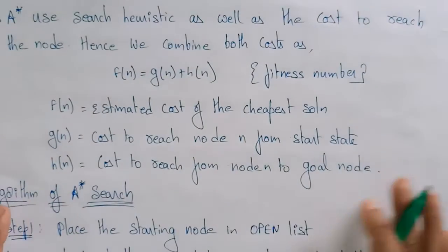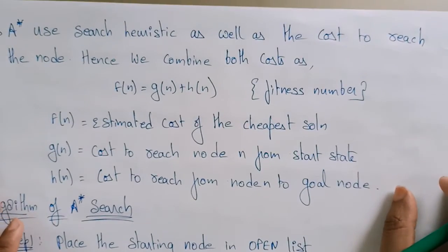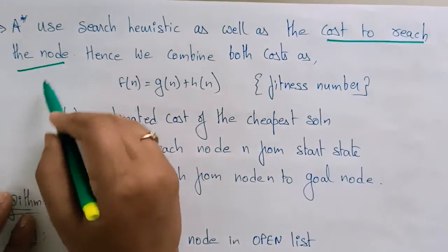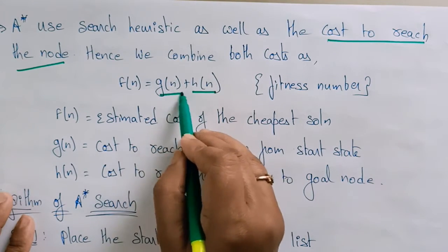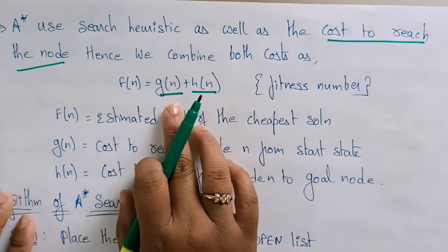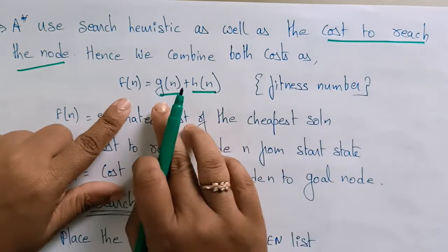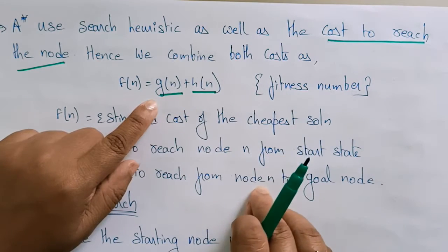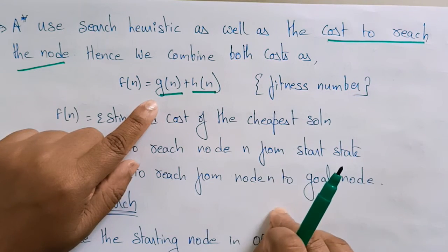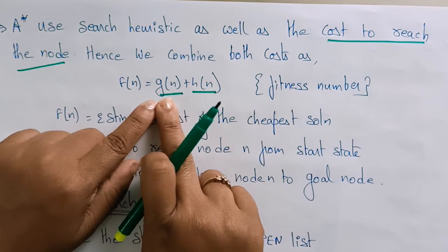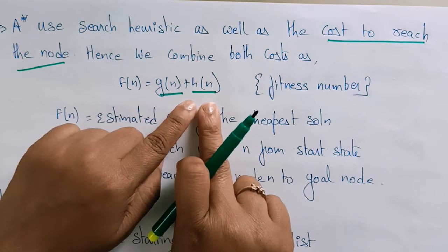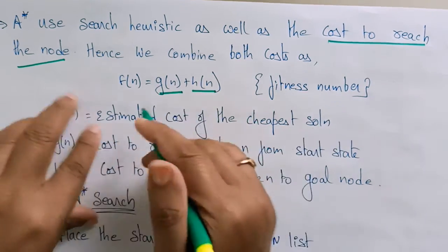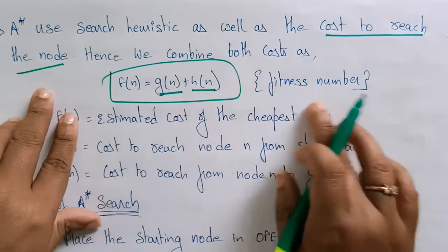So A star uses a search heuristic as well as the cost to reach that node. Hence we combine both costs as g(n) plus h(n). g(n) is the cost of that particular node from the start node, and h(n) — which you already know — is the heuristic value already given for that particular node. This complete function is called the fitness number.